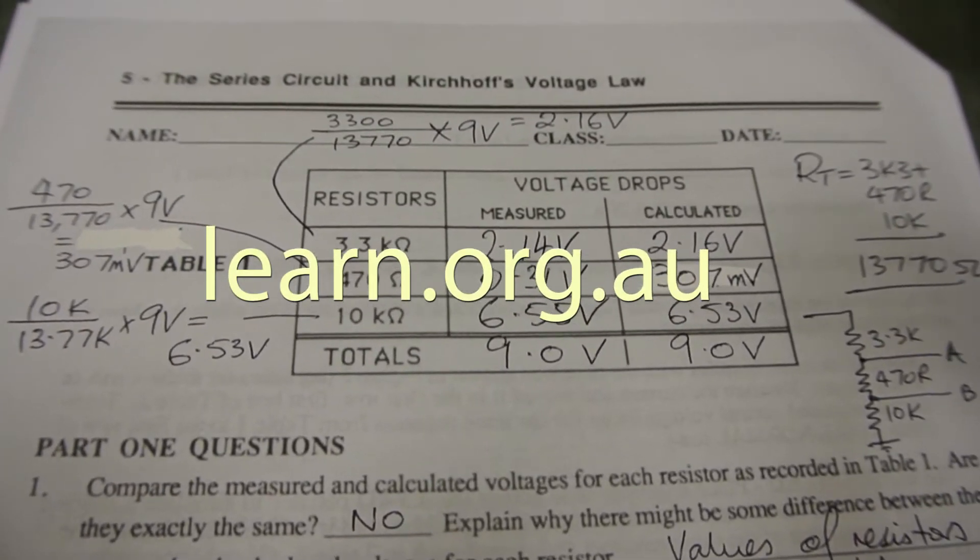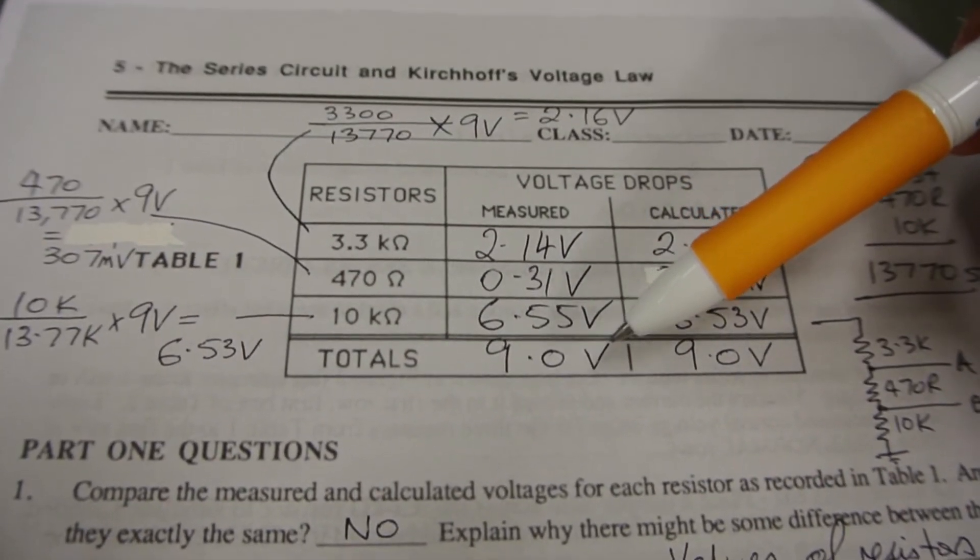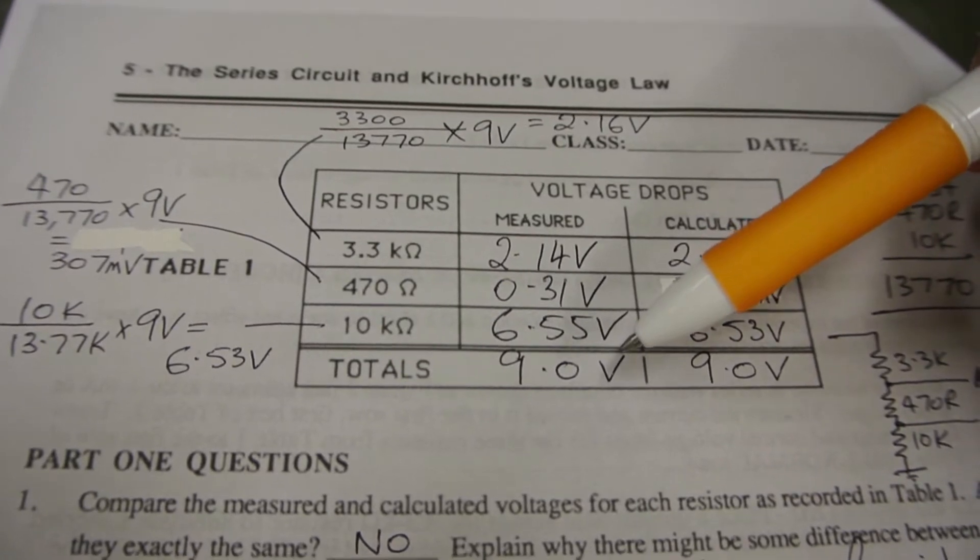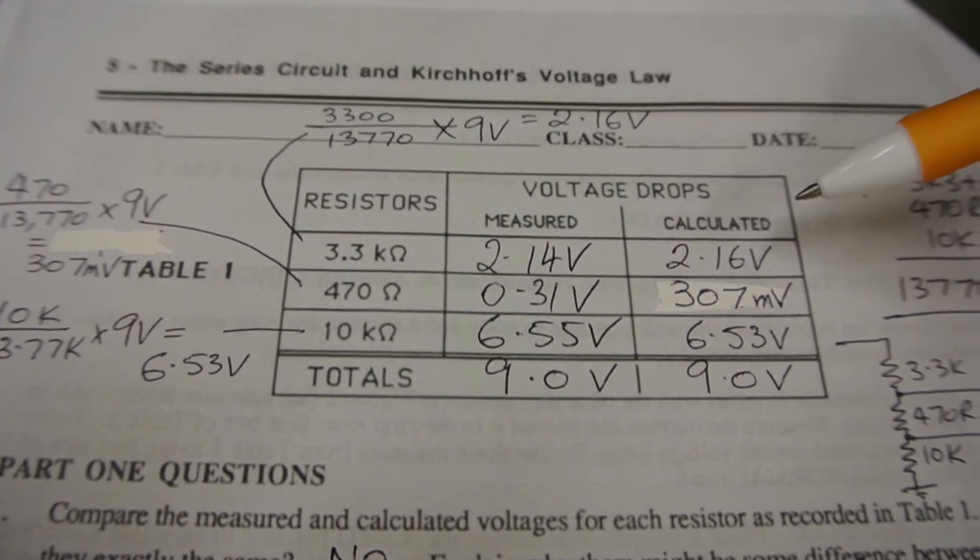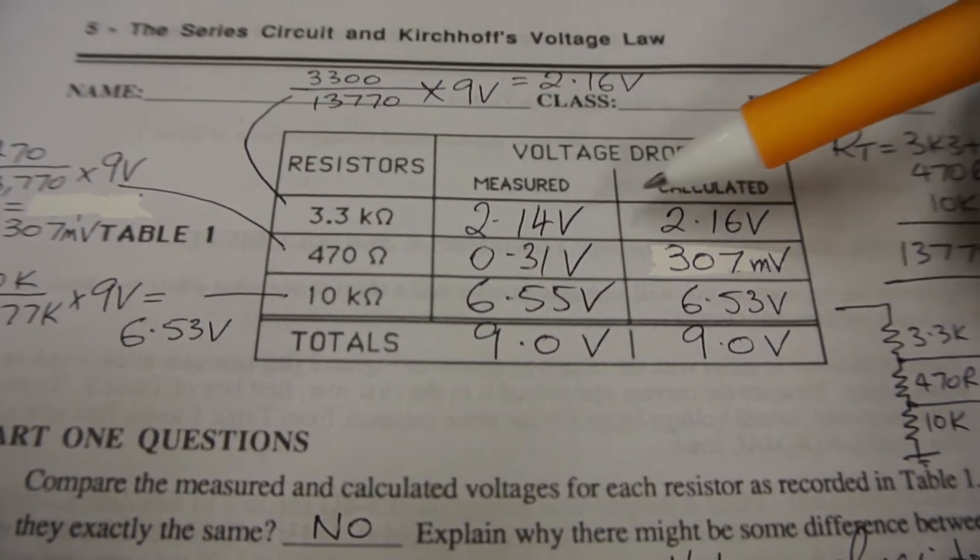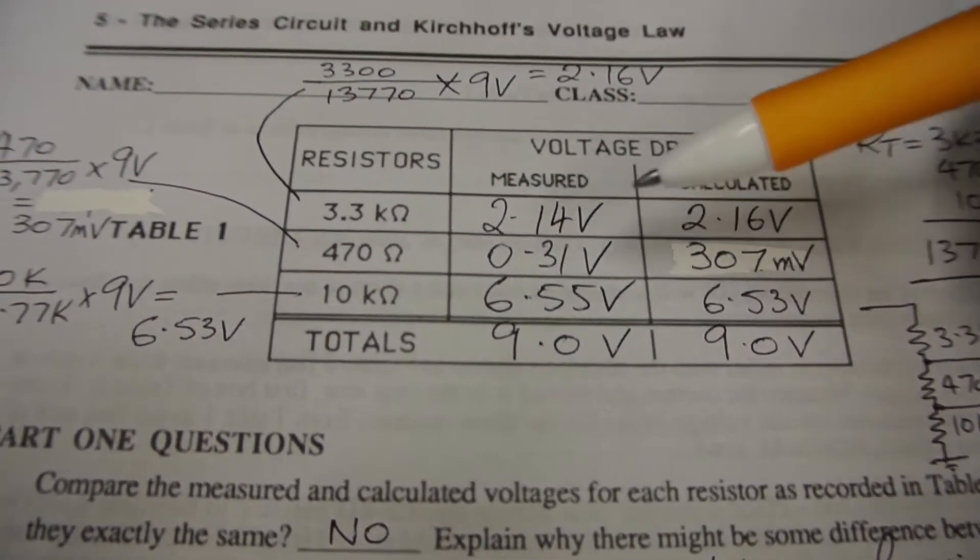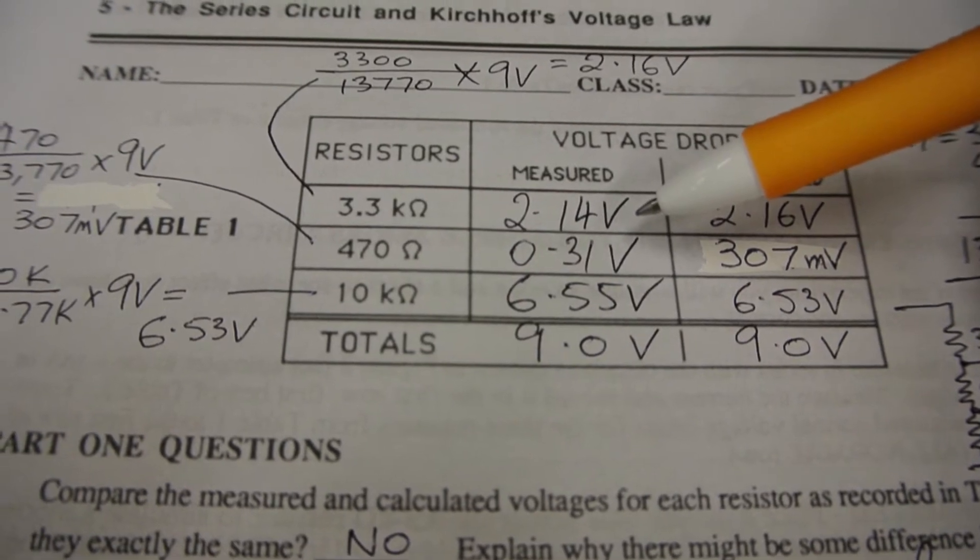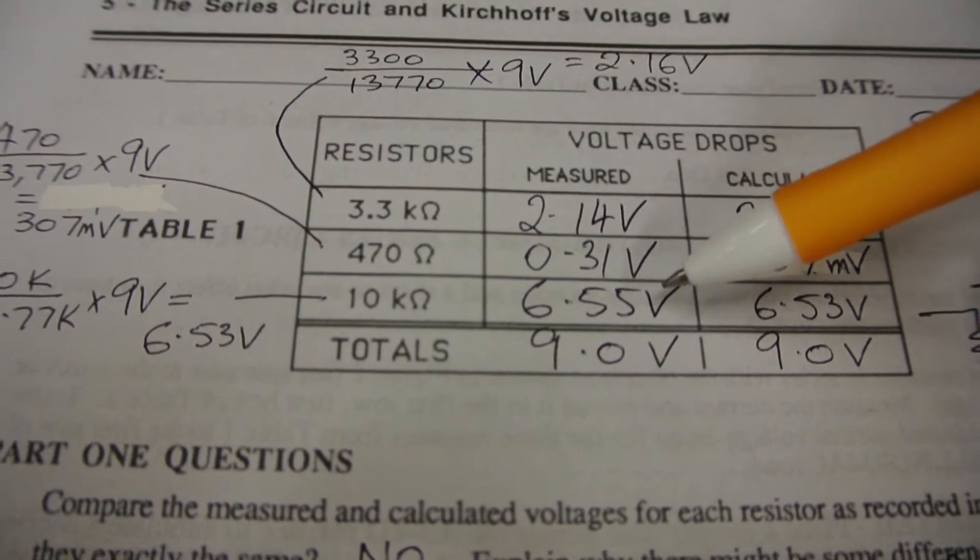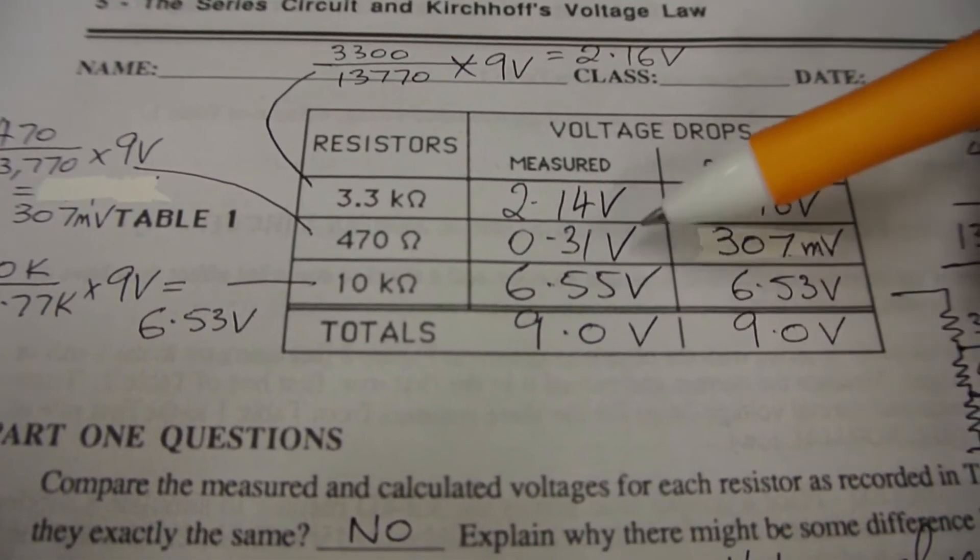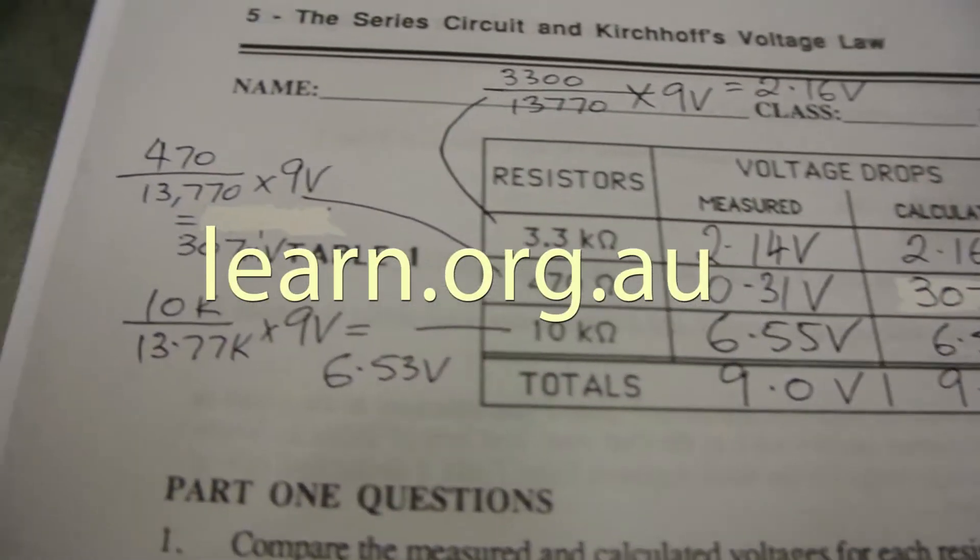So I've gone ahead and done the measurements as we did before, written them into the table, and added them up to 9 volts. I've done the calculations, and although they're a little bit different to the measured values in each case, they still add up to 9 volts. That's going to always be because the resistor values tolerances are going to be slightly higher or slightly lower on each resistor. But at the end, the end result is always going to be the same. If it's not the same, you've got a major problem in the circuit.